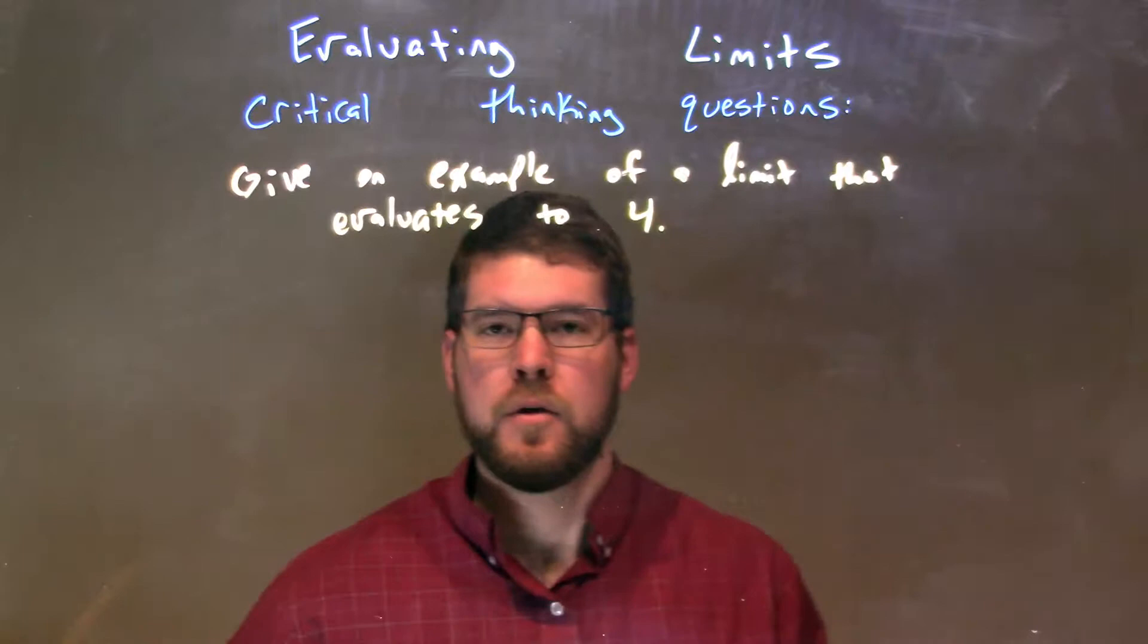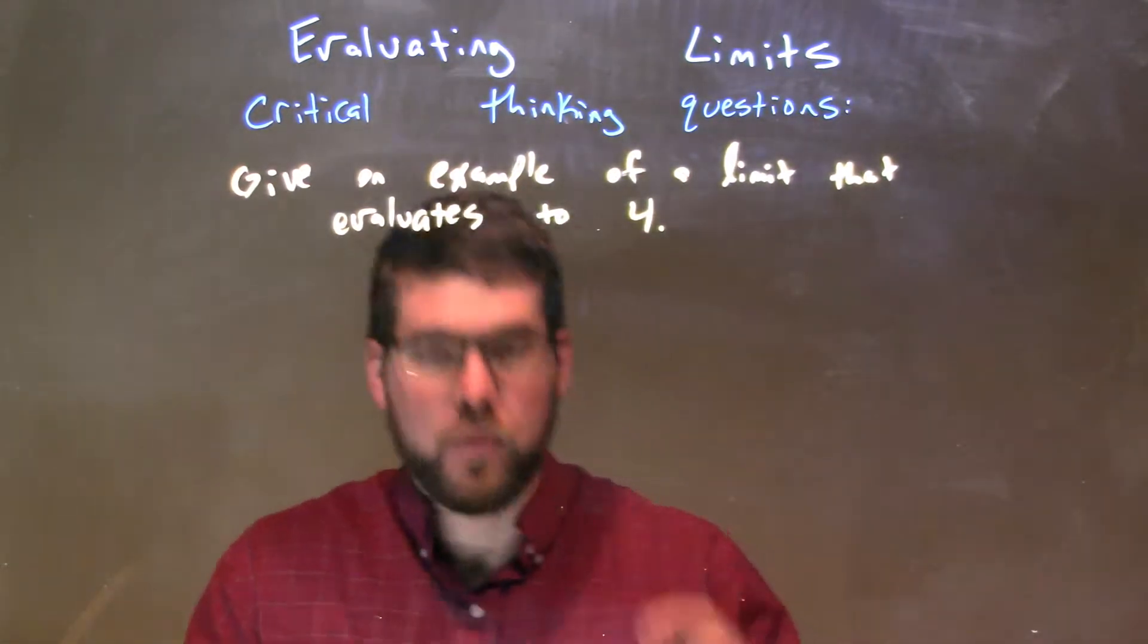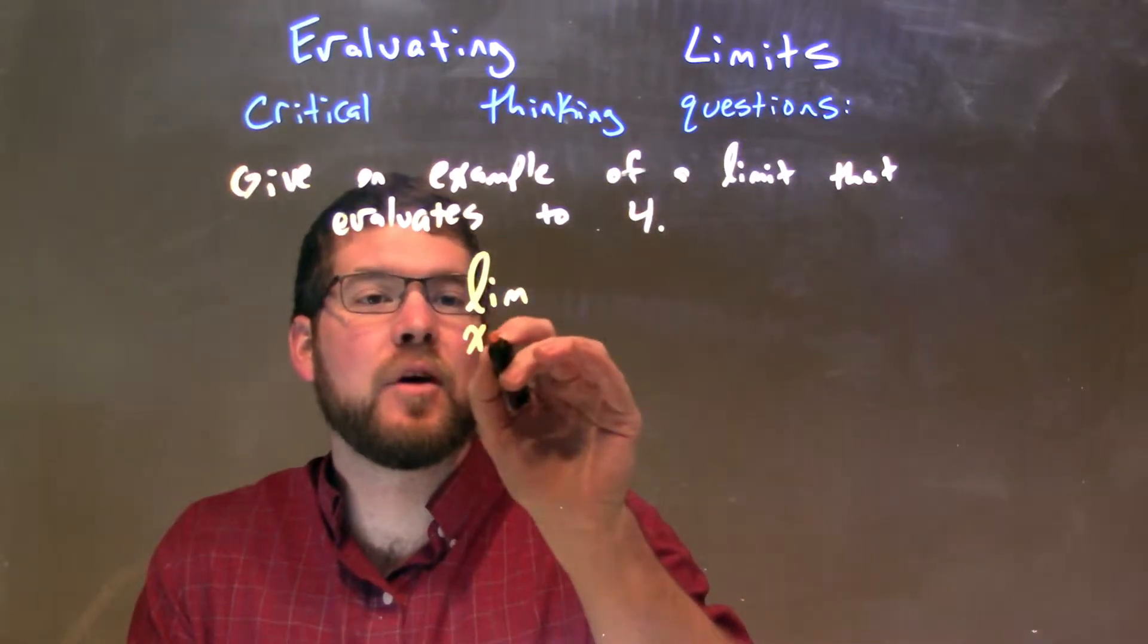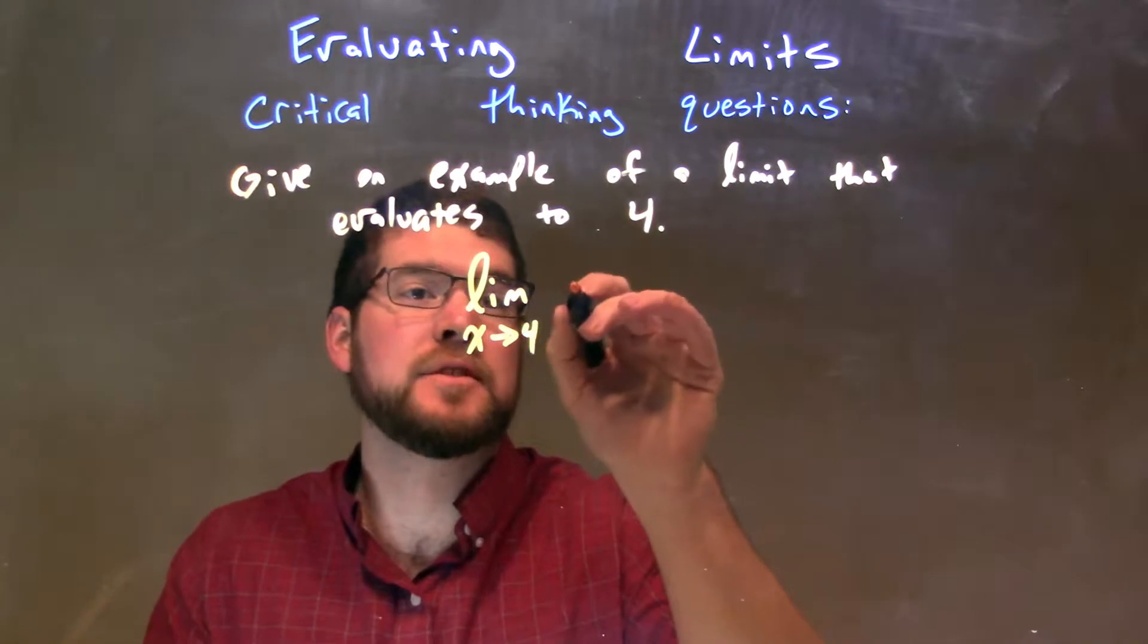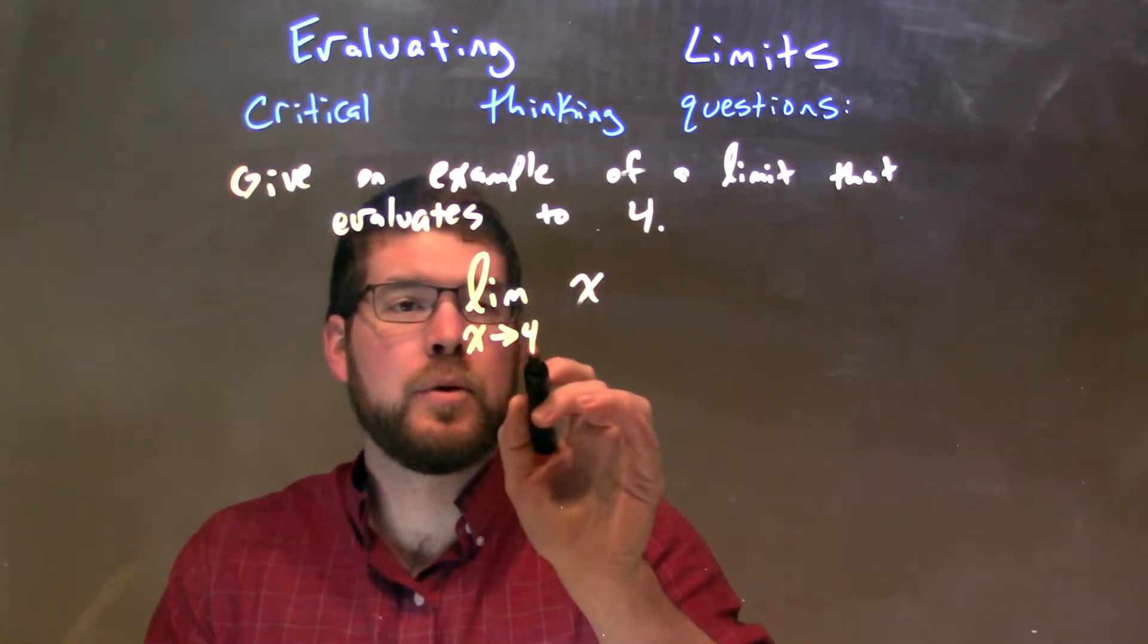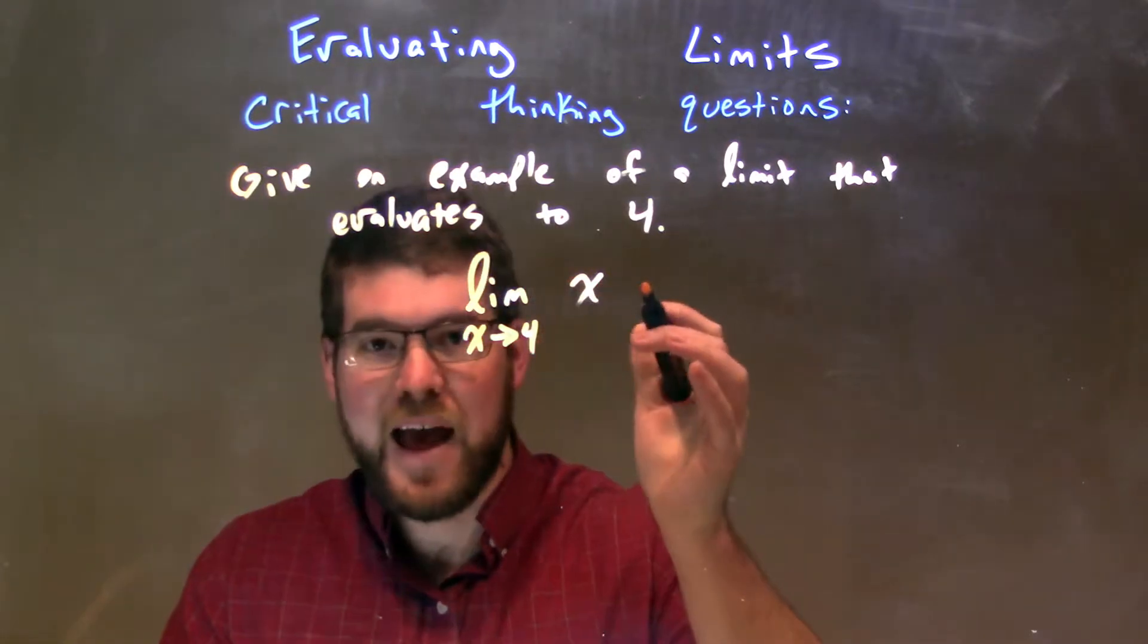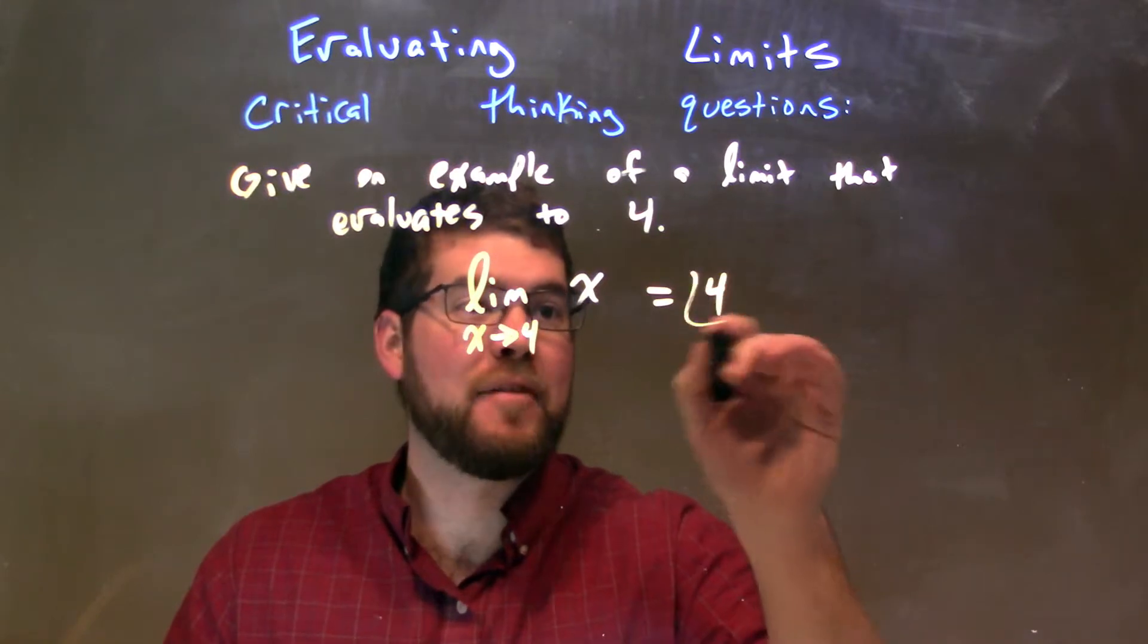So we want to find a limit that evaluates to 4. Well, a simple one is if we take the limit as x approaches 4 of just x. That limit as x approaches 4, we just have x itself. We can plug it in directly and it equals 4, and there we have it.